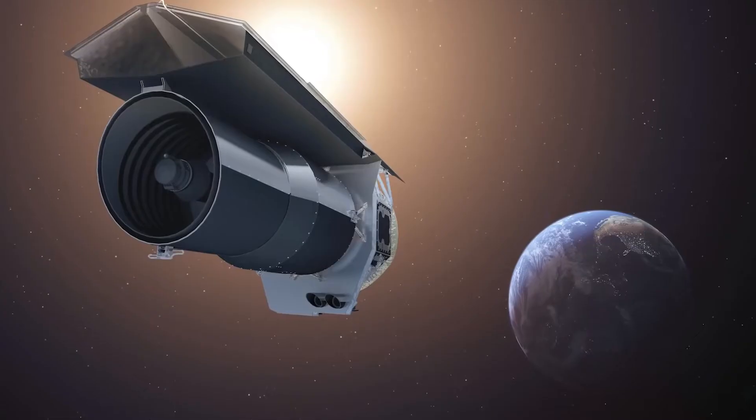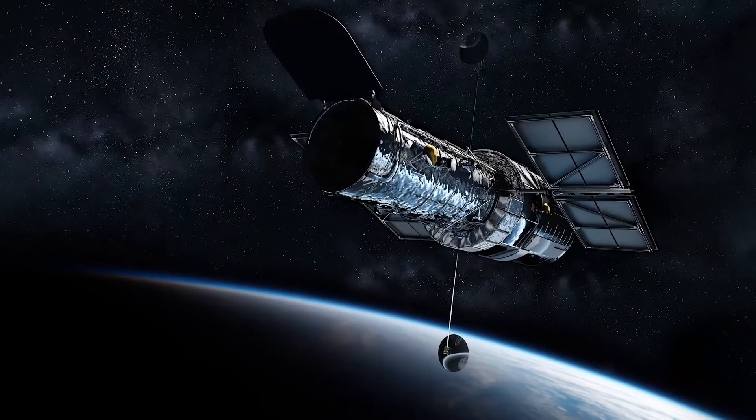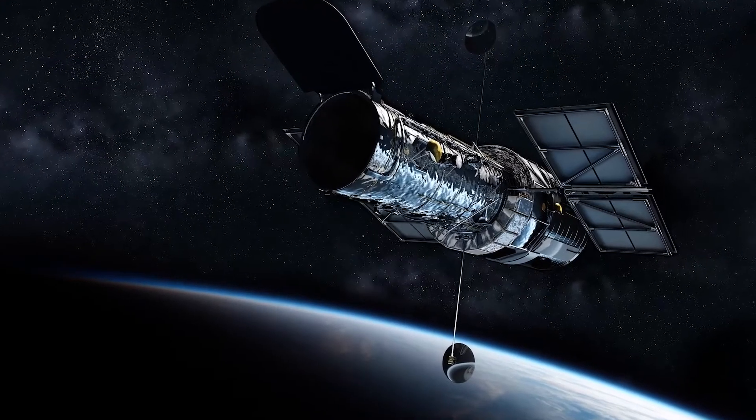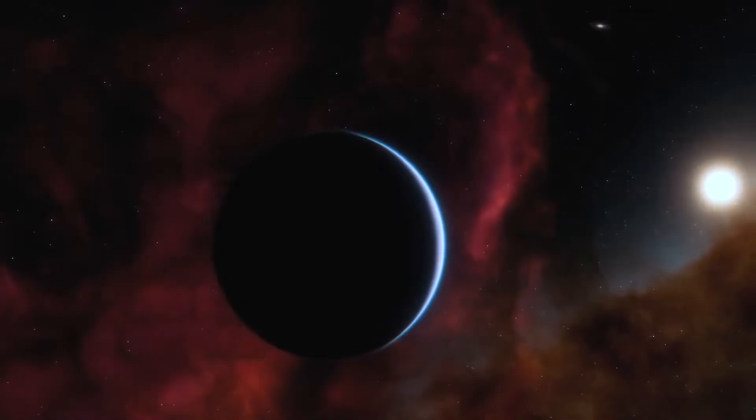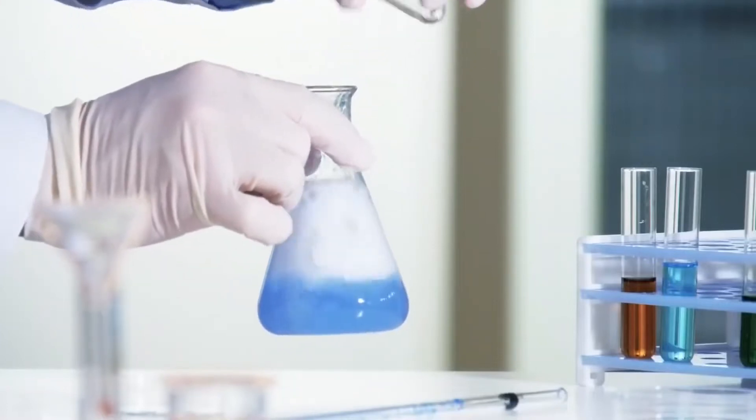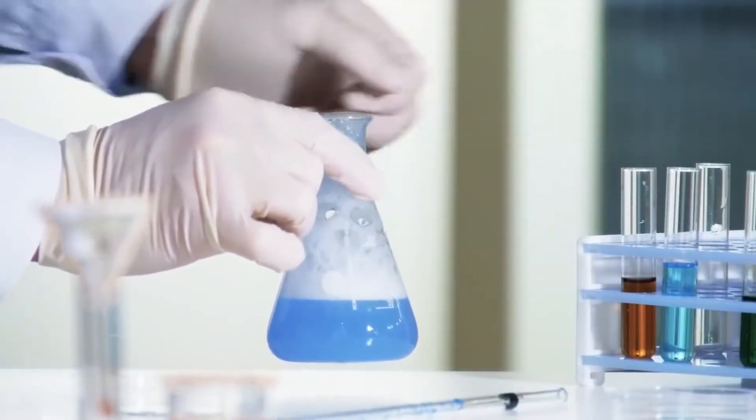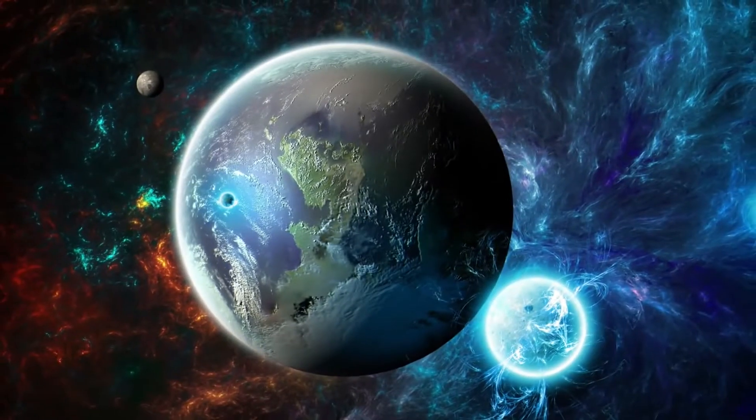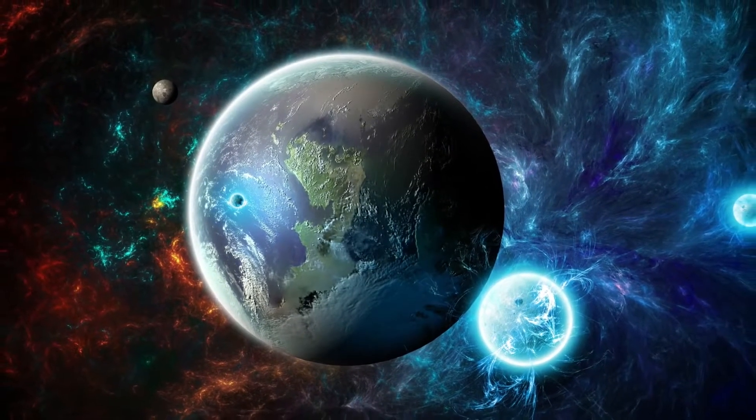The next-generation planet finder, which will be launched into space in the 2030s or 2040s, is already in the design stage. Professor Sarah Seeger of physics at MIT searches for potential chemical combinations that might hint at the existence of extraterrestrial life.